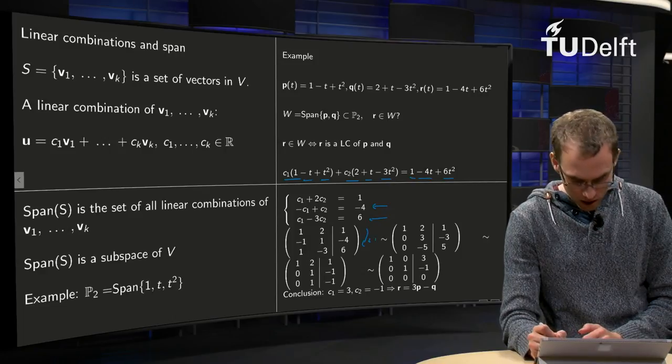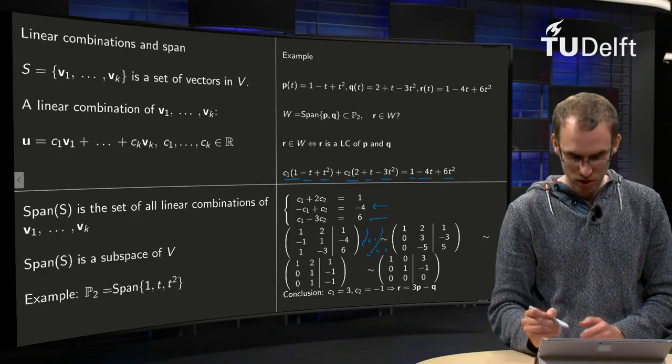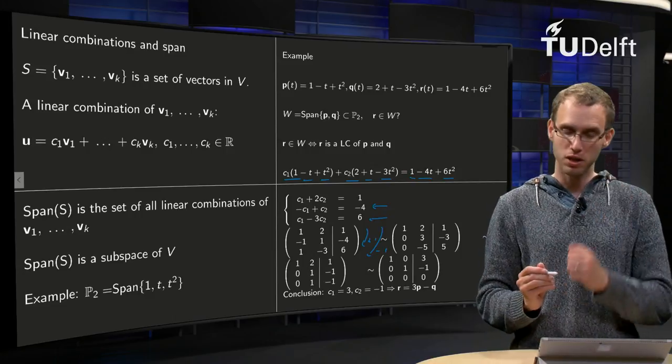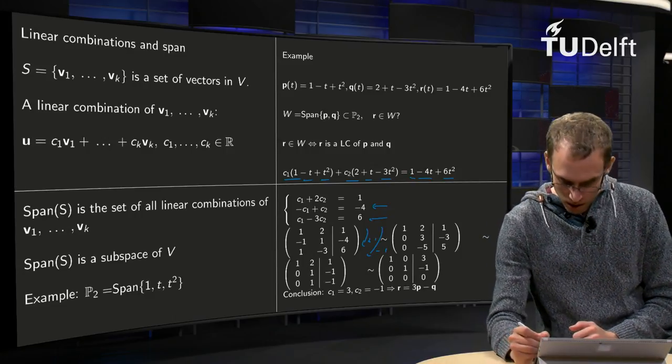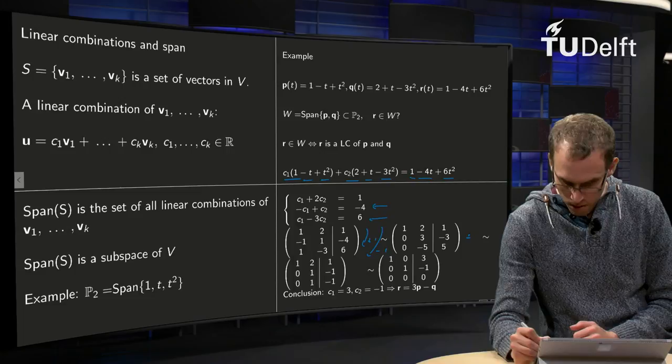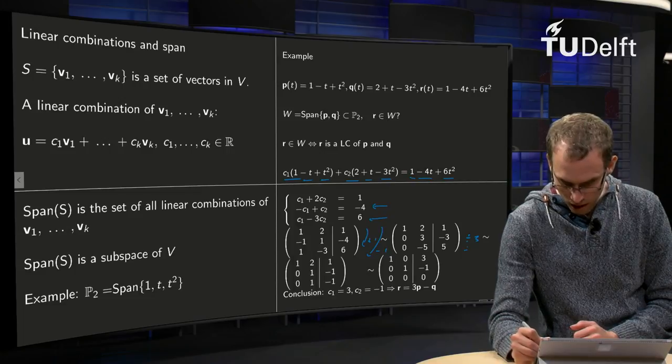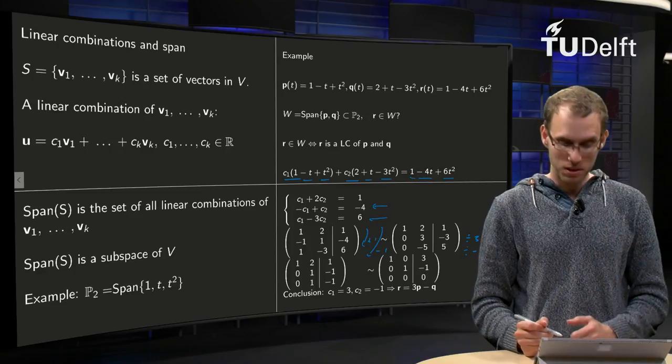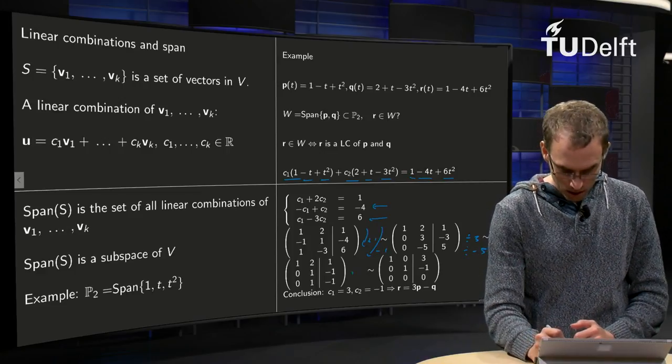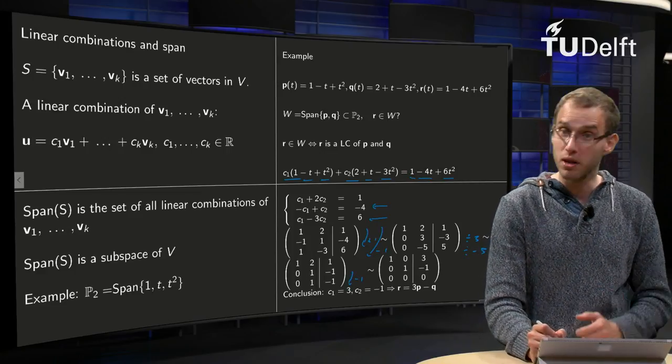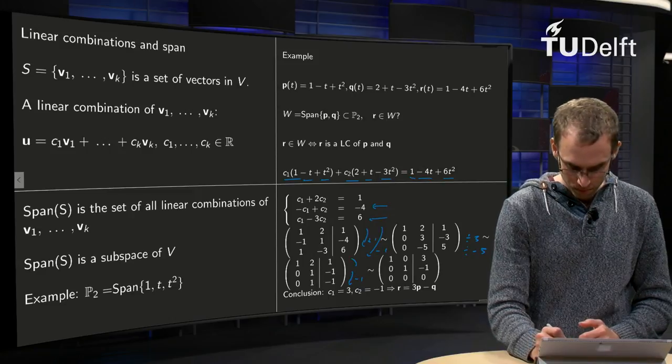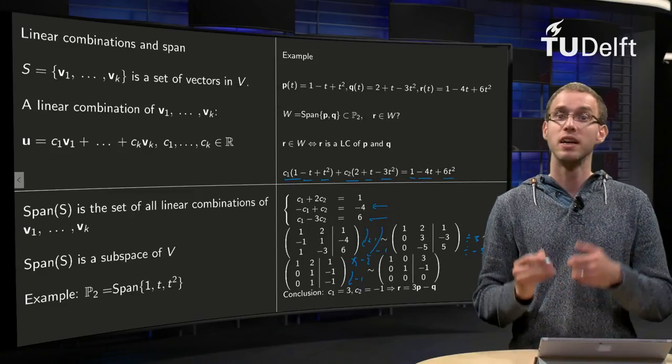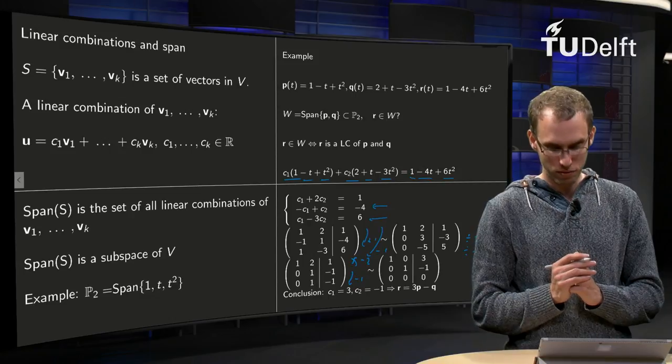First, add rows and subtract rows over here. Then we get the next augmented matrix. We can clean up by dividing by 3 and dividing by minus 5. Then you see something nice is happening—we can subtract rows. Let's make a reduced echelon form, subtract twice, and then we have our reduced echelon form.